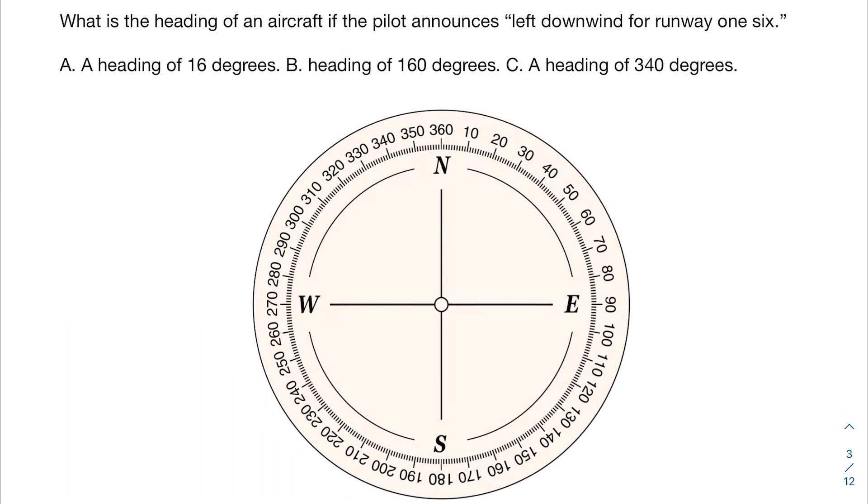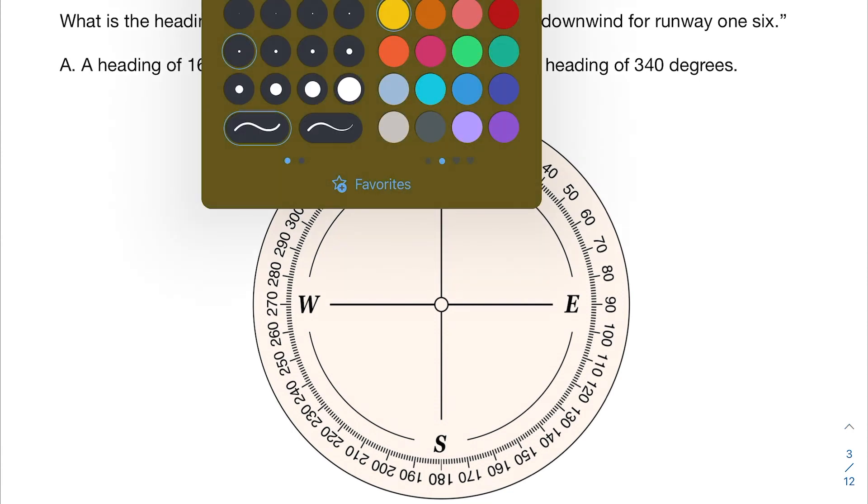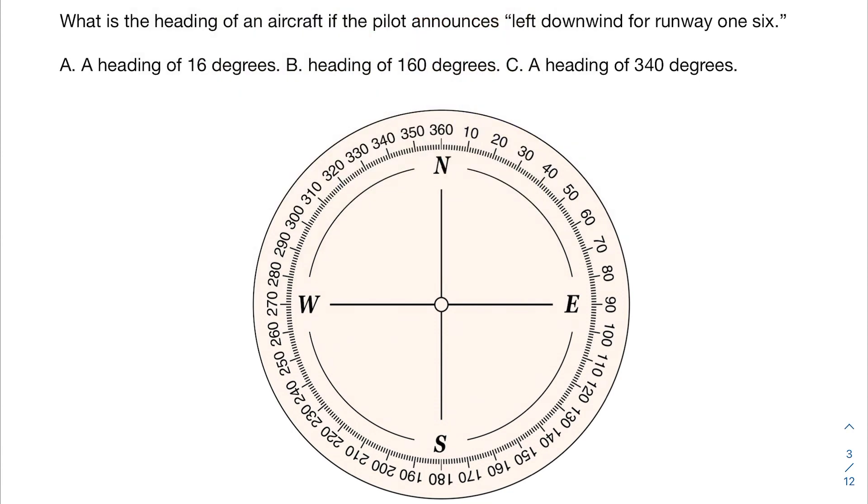So here's another practice problem. Go ahead and pause the video and see if you can figure it out yourself, and then continue the video, and I'll go through it. So the question here is, what is the heading of an aircraft if the pilot announces left downwind for runway 16? And then we have three descriptions here. So once again, let's go through the different words in this phrase. So we have left. That means that we're going to be following the left-hand traffic pattern. So anytime we turn, we're going to turn left. We're downwind. Remember what that means? That means that we're following the direction of wind, and we're on runway 16. So that means that when we finally land, we will be landing in the direction of 160 degrees.